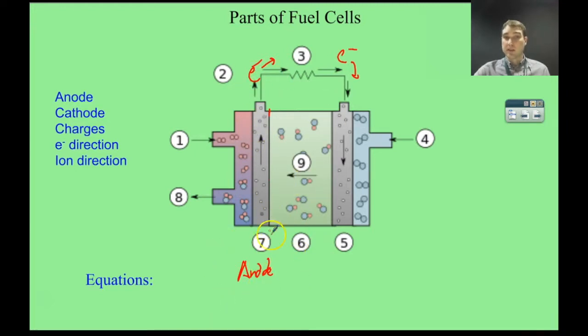The other thing we know is the charge of the anode. Same as any other galvanic cell, the anode has a negative charge. So that means over here we have our cathode. And the cathode has to have the opposite charge. Now what's passing in here is going to be oxygen gas. Here we have hydrogen gas passing in. And our waste is water vapour passing out over here.